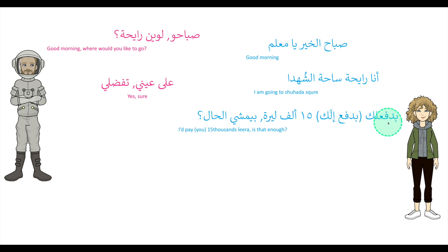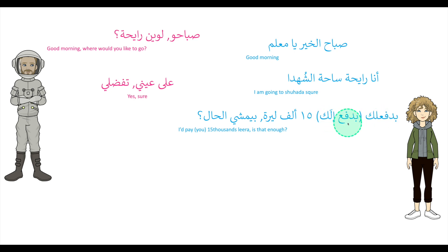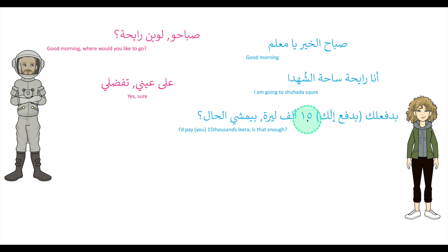She says بدفع لك خمستاشر ألف ليرة — بيمشي الحال? In dialect we tend to shorten بدفع لك, jumping over the alif which is an airy letter; this is very common in dialect. So she says: I'll pay you 15,000 ليرة — is that alright? This reflects how taxi drivers in the Middle East often operate independently, so passengers propose an amount.